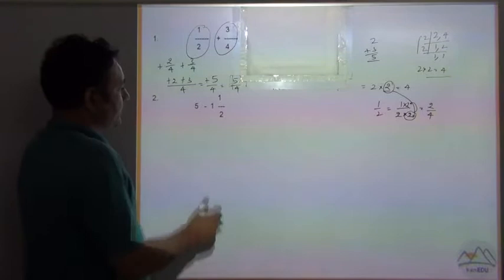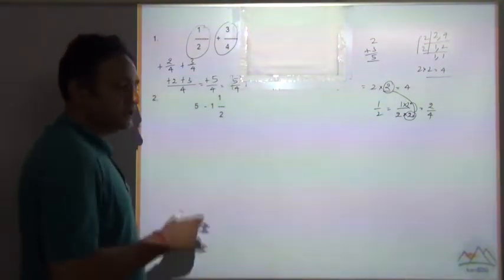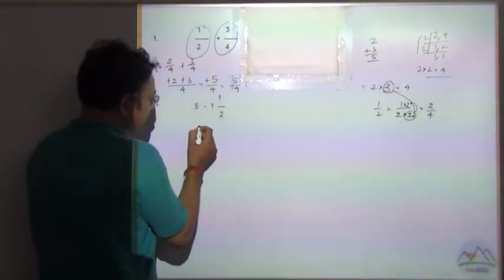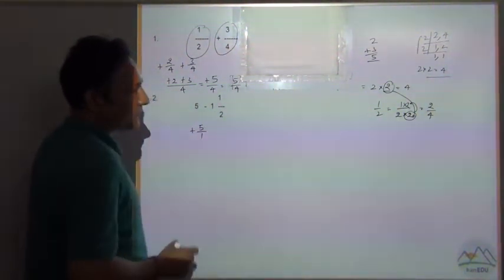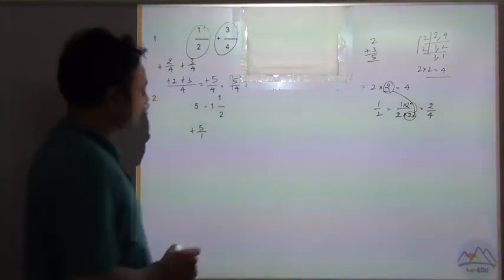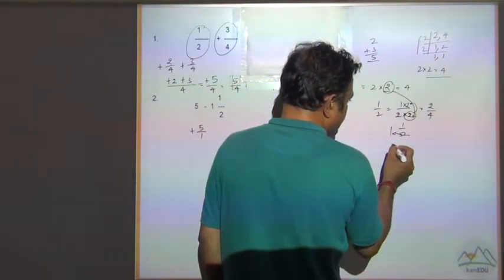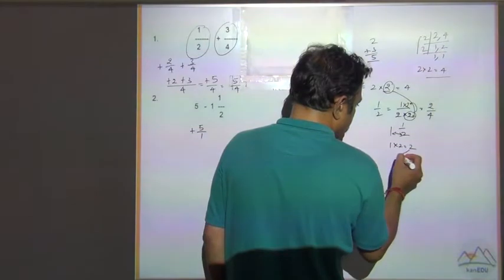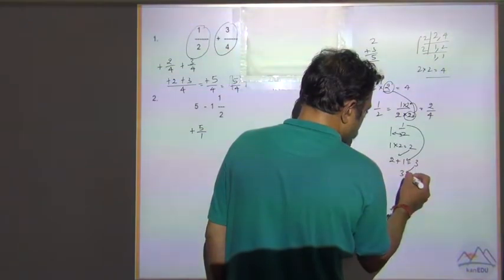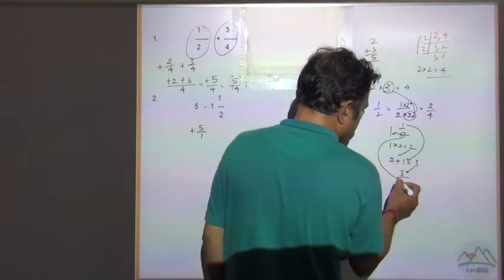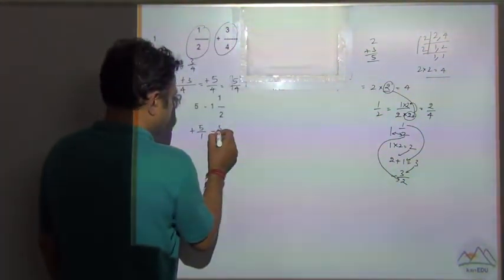The next question: the rule says convert all numbers into fraction form. So 5 can be converted into 5 by 1, with a plus sign. The improper mixed number 1 and 1 by 2 is converted: 2 multiplied by 1 is 2, plus numerator 1 equals 3, so it becomes 3 by 2. The sign will be minus, so minus 3 by 2.